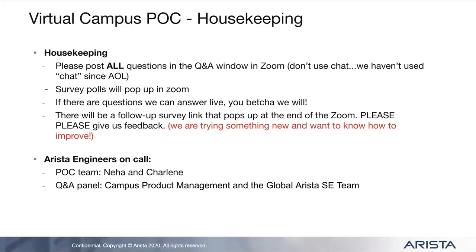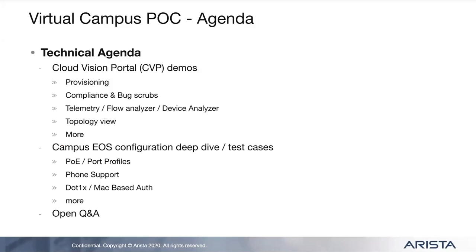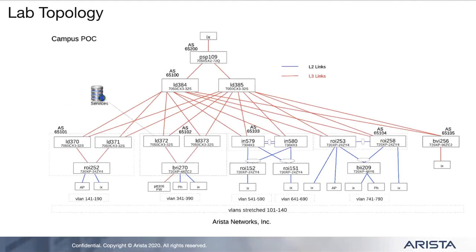From the POC team, we have Neha covering Cloud Vision and Charlene covering EOS campus-specific pieces — port profiles, phone support, 802.1X, and more. Cloud Vision is the same consistent management software used in the data center, tap aggregation, edge management, and cloud deployments. This is a quick topology overview on real hardware, including campus-specific devices: 7050, 720, and 7300 series. We have IXIA running to generate traffic, along with phones and APs.